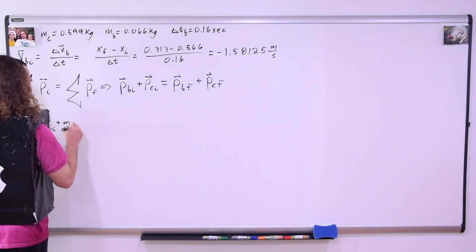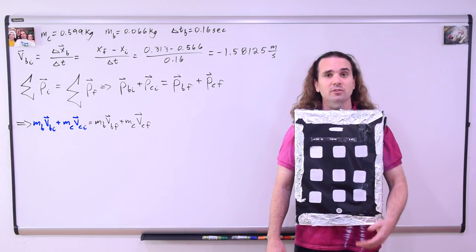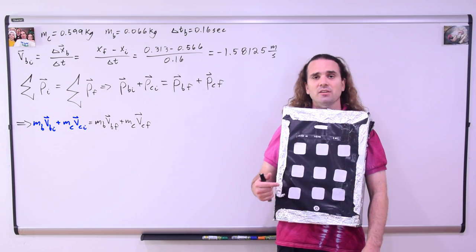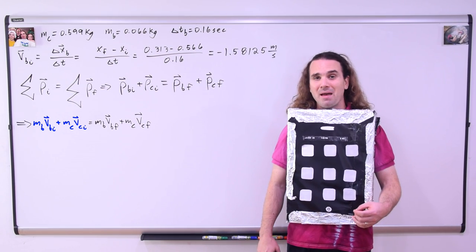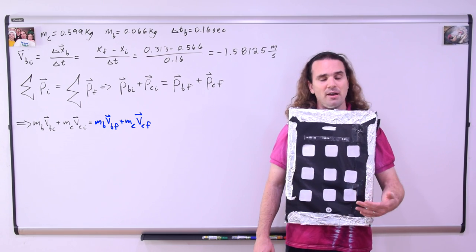Therefore, the mass of the ball times the velocity of the ball initial plus the mass of the cart times the velocity of the cart initial is equal to the mass of the ball times the velocity of the ball final plus the mass of the cart times the velocity of the cart final.